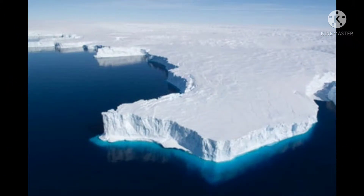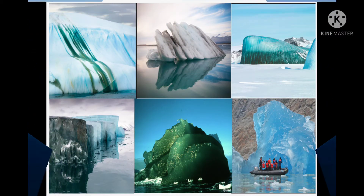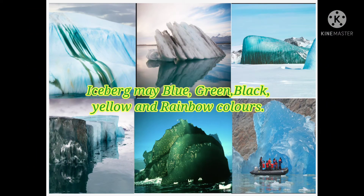Icebergs are generally white, as they are covered by snow, but they may be green, blue, yellow, black, or even rainbow colored. Sea water, algae, and lack of air bubbles are the reasons for this color diversity.